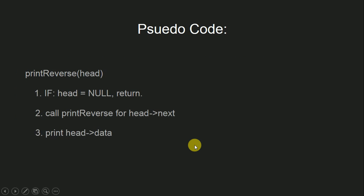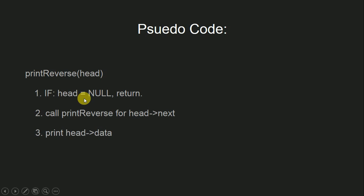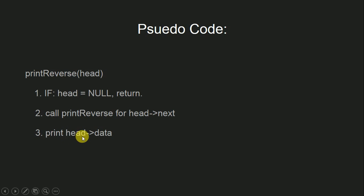Let us now look at the pseudo code of the function. As you can see, the name of the function is print_reverse and it takes the head node of the linked list as an argument. It then checks whether this node is null or not. If this node is null, it will return control. If this node is not null, it will invoke itself by passing the next node as an argument, and finally print the data of this node.